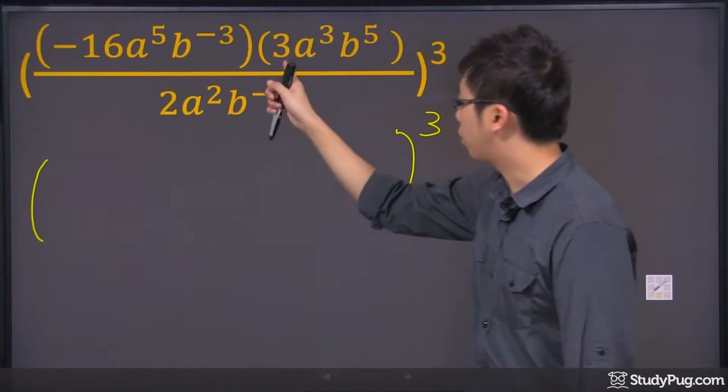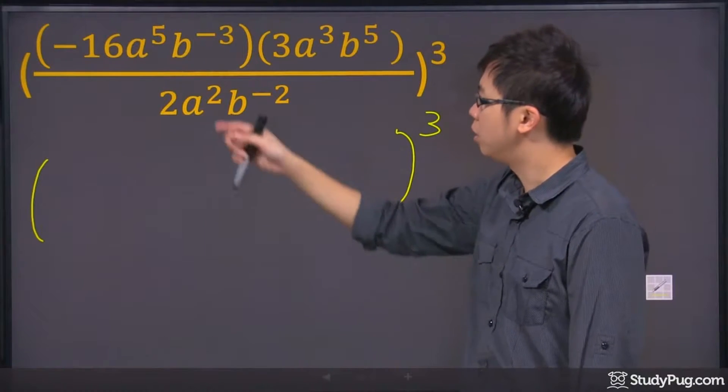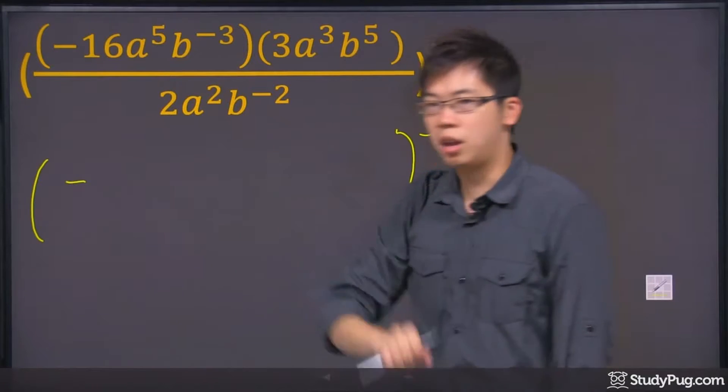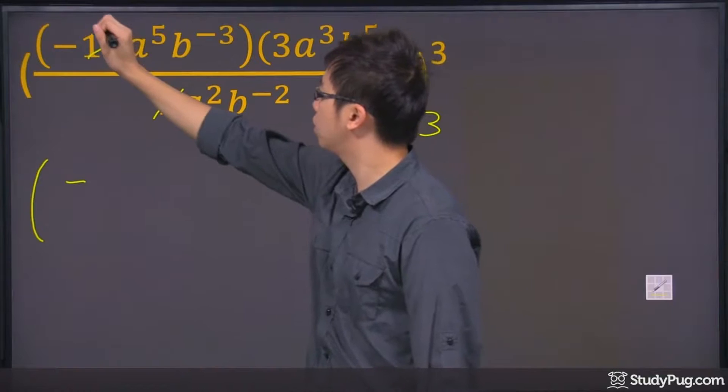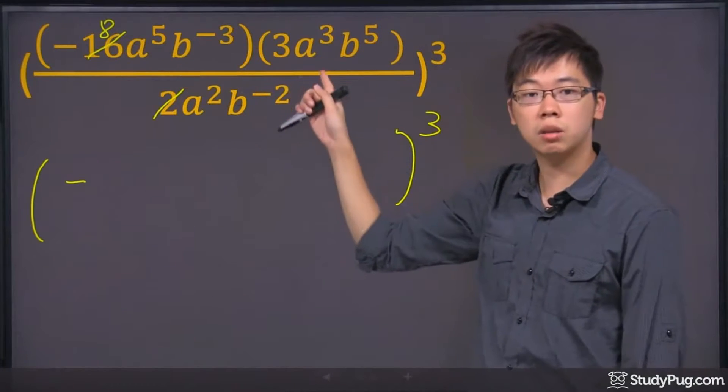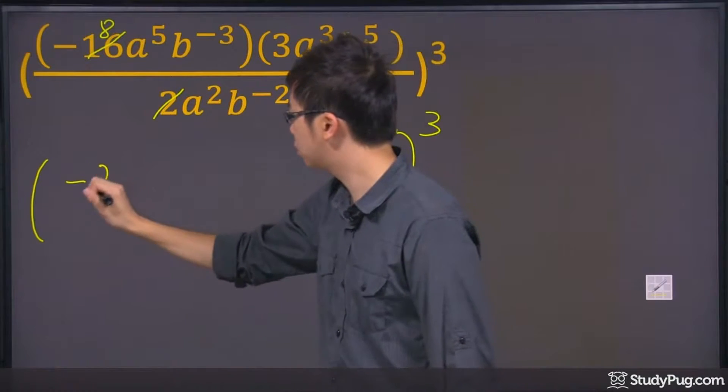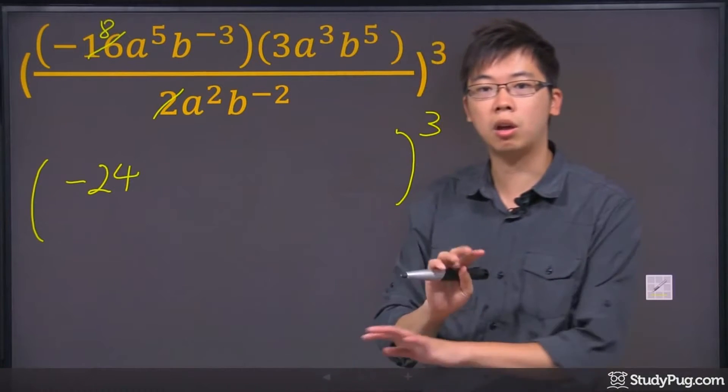So I have a negative 16, a 3, and a 2. That means we will still have a negative. 16 and 8, we're going to do a quick reduce right there. That's going to be 8, and 8 times 3 gives you 24. So let's put 24 there, and we're done with all the coefficients.